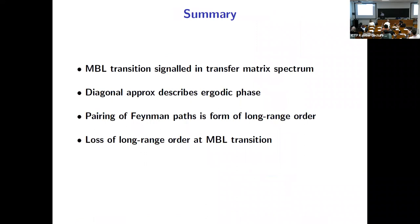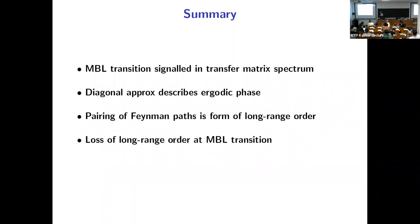So the messages are: the MBL transition is signaled in the transfer matrix spectrum; the diagonal approximation familiar from single-particle problems in disordered conductors in terms of Diffusons and Cooperons gives a description of the ergodic phase; and for a quantity such as the spectral form factor there is freedom in the pairing of Feynman paths within the diagonal approximation. That pairing is a form of long-range order, and it's exactly this long-range order that disappears at the MBL transition.